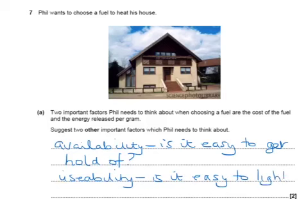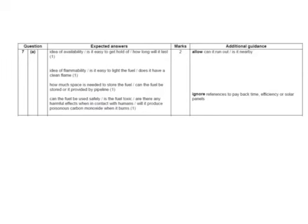Using the acronym TEACUPS, you obviously can't use C for cost or E for energy released per gram, as those are already given. But there are a number of other options. For example, the mark scheme also accepts the space needed to store the fuel, whether the fuel is toxic, and whether it produces any pollution such as poisonous carbon monoxide when it burns. So really, any of those remaining letters from TEACUPS would be suitable answers for that question.